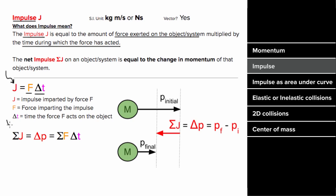And the net impulse is going to be equal to the net force times the time during which that net force was acting. And this is also going to be equal to the change in momentum of that system or object. In other words, if a mass had some initial momentum and ends with some final momentum, the change in momentum of that mass, p final minus p initial, is going to equal the net impulse.